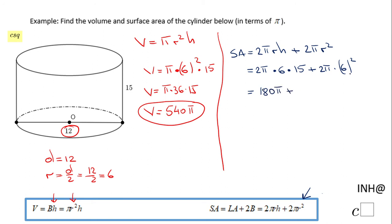6 squared is 36 times 2, that's 72 pi. And 180 plus 72, that will be 252 pi. The surface area of this cylinder is 252 pi.